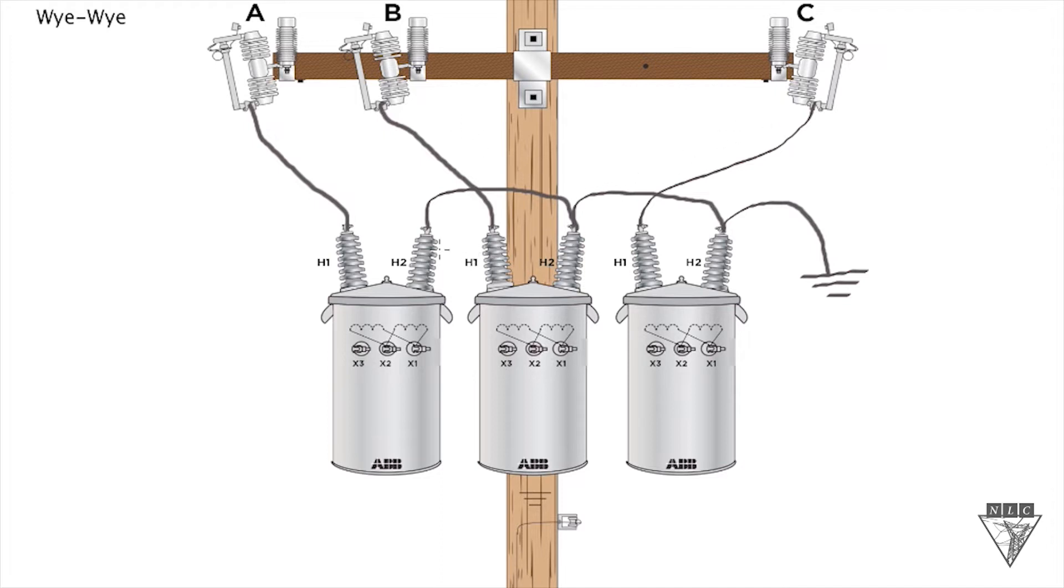H1 bushings each go to a phase, and all the H2 bushings are tied together and then tied to ground. YY you tie. All right, let's move on to the secondary side.